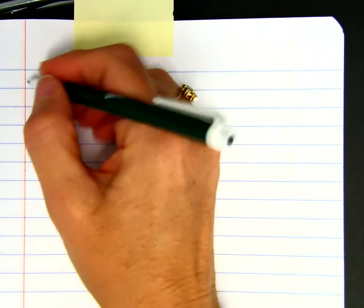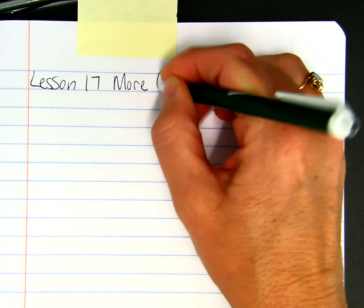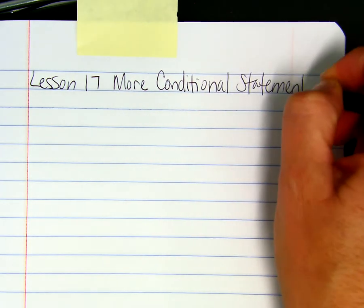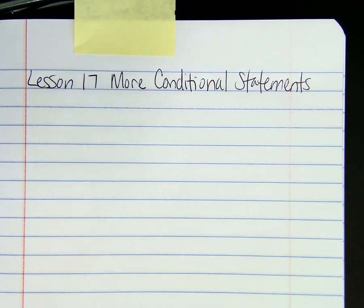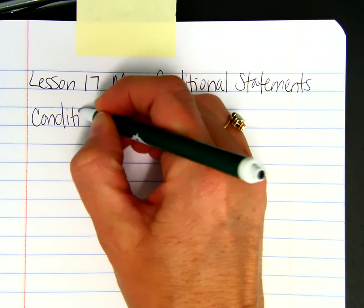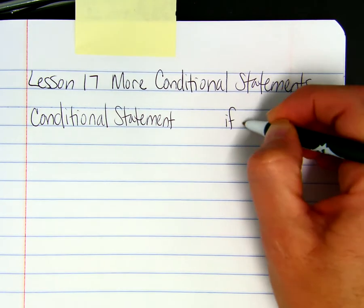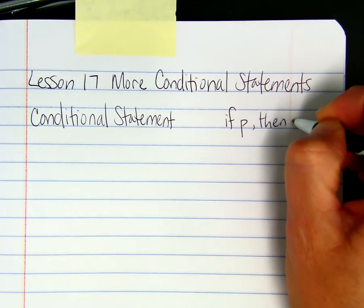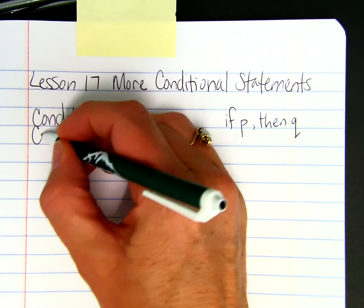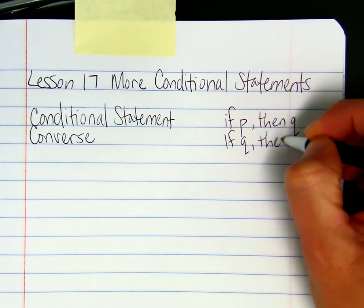More conditional statements. We've already talked about how a conditional statement is 'if P, then Q,' where P is the hypothesis and Q is the conclusion. We've also already talked about how the converse is 'if Q, then P.'